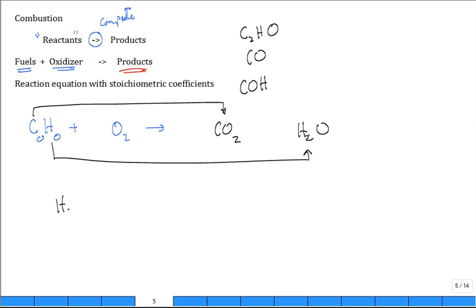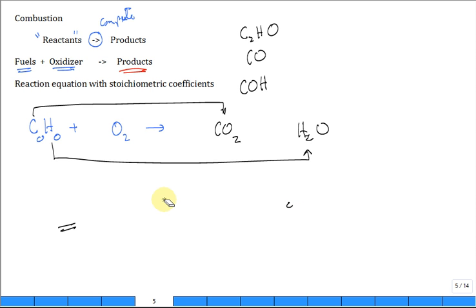For example, H₂ plus one-half O₂ goes to H₂O. Hydrogen is a good fuel. It's not better for the hydrogen to stay as H₂ — it goes to H₂O. That's a question more for a chemistry professor, but all I'm telling you is that's the lowest energy state, and so that's our preferred product out of combustion.